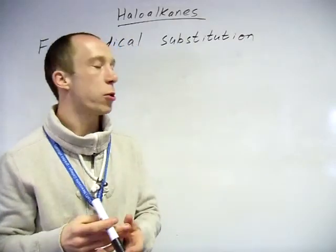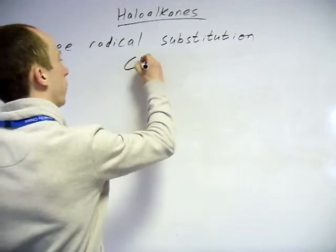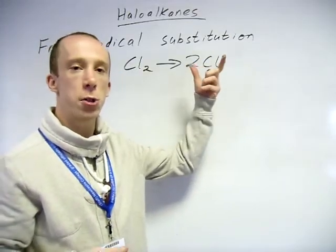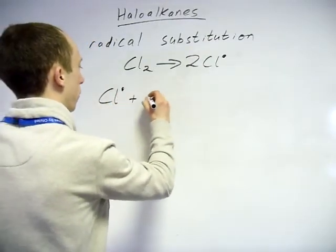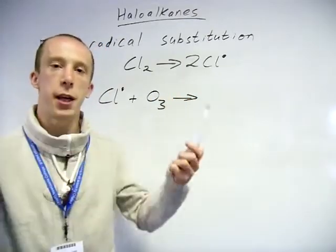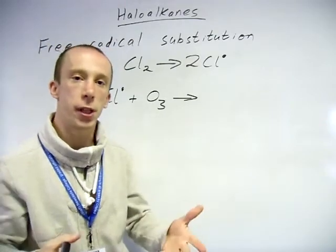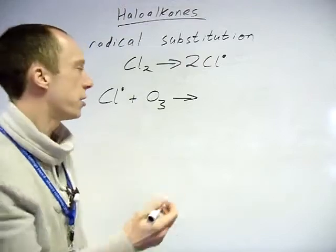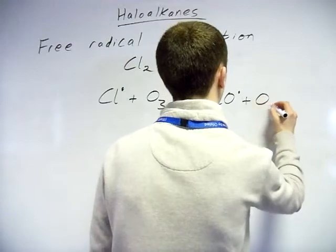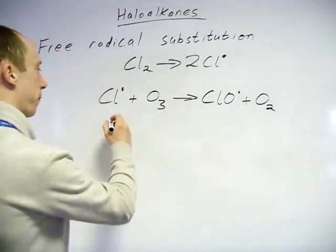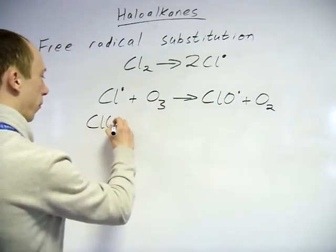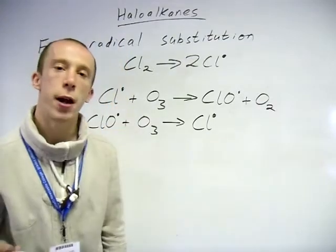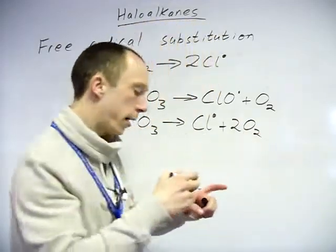Now the other bit which you need to know is ozone depletion - the actual equations for it. Usually you need to know how these chlorine free radicals break down ozone. So ozone, O3, the nice protective layer which stops most of the sun's harmful UV rays actually getting to us. The way it breaks down: it breaks down into oxygen instead. So there's your first propagation step. Now this reactive species can bump into some more ozone - it's going to regenerate the chlorine free radical which got used up, and produce more oxygen.